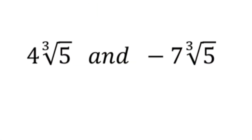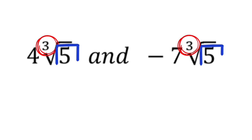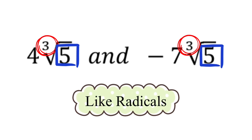Now let's have the first example. We are given 4 times the cube root of 5 and negative 7 times the cube root of 5. The only parts we need to check are the indices and the radicand. In this case, both indices are 3 and both radicands are 5, so we can go ahead and say that these two expressions are like radicals.